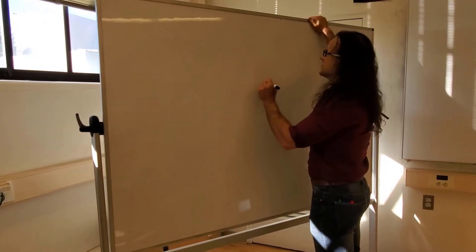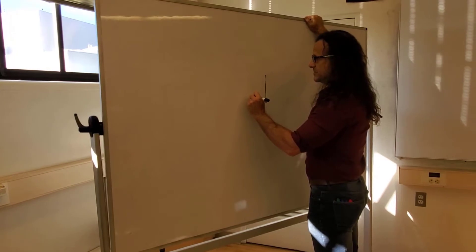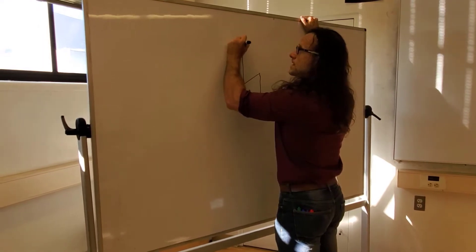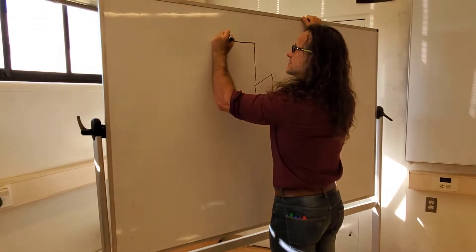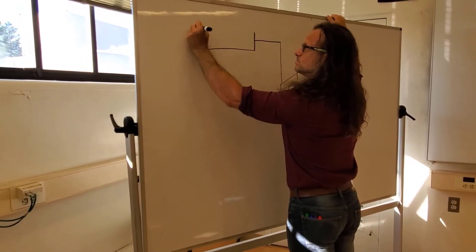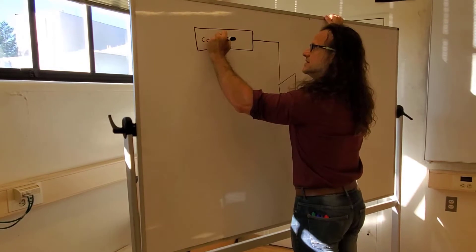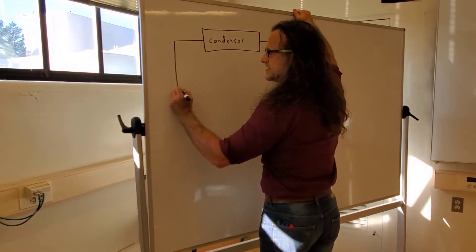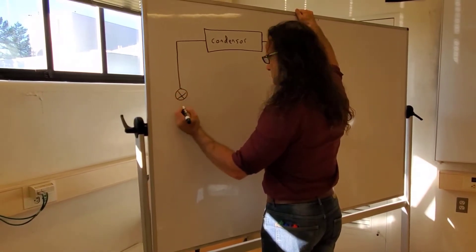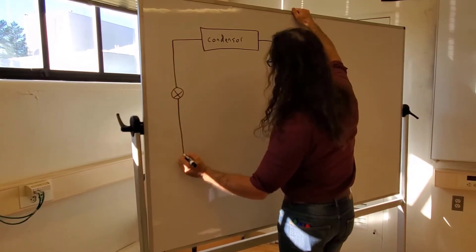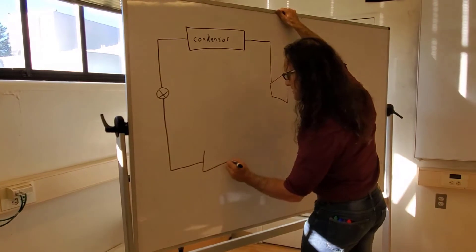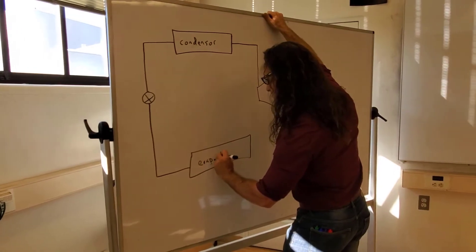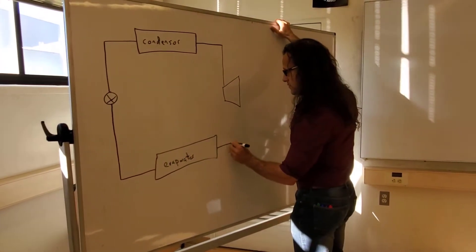I'm going to start drawing the refrigeration cycle. It doesn't matter where we start. I'm going to start with a compressor right here. Out of our compressor, we will come to our condenser. Out of our condenser, we'll hit the expansion valve. And from our expansion valve, we'll hit the evaporator — very similar to the condenser. And out of that, we'll come back into our compressor.